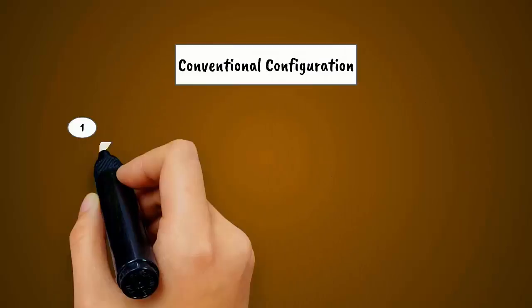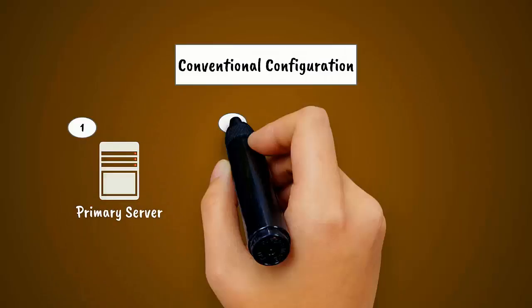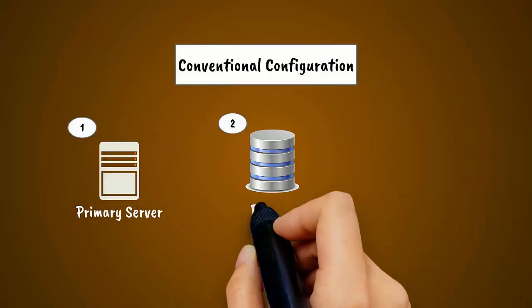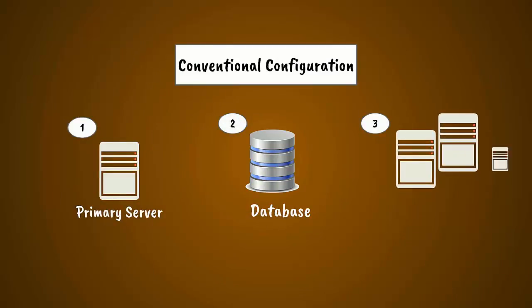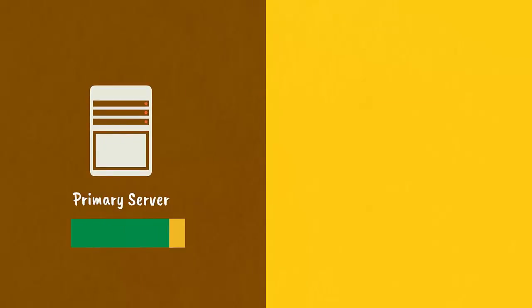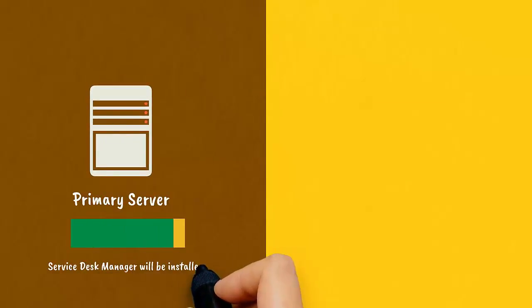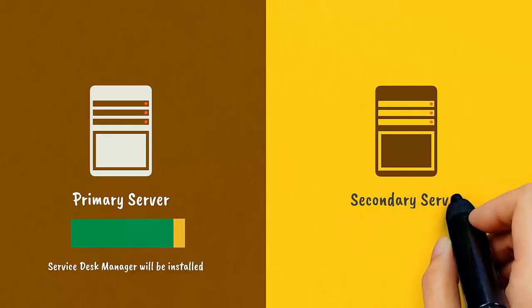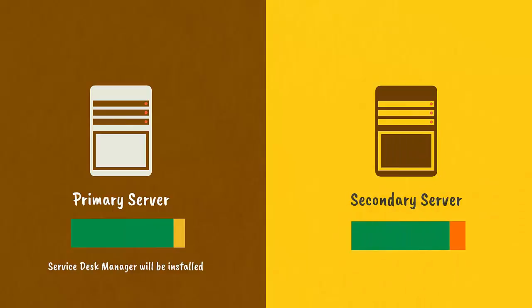The conventional configuration includes a primary server, a database, and one or more secondary servers. For this demonstration, the Service Desk Manager will be installed on the primary server, and the CMDB Visualizer and Federated Search options will be installed on the secondary server.